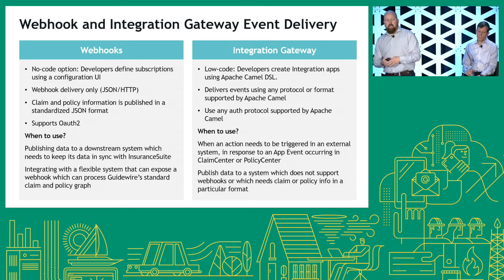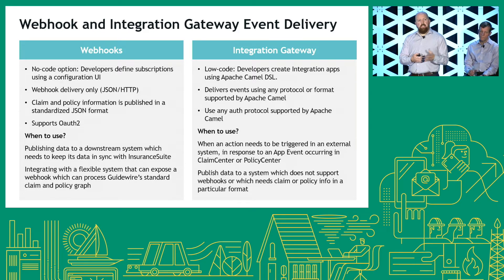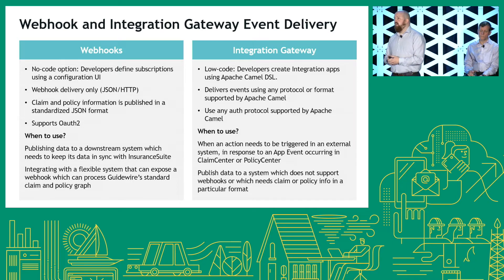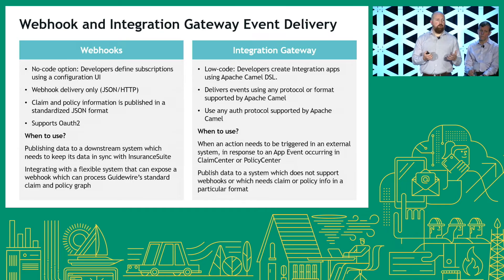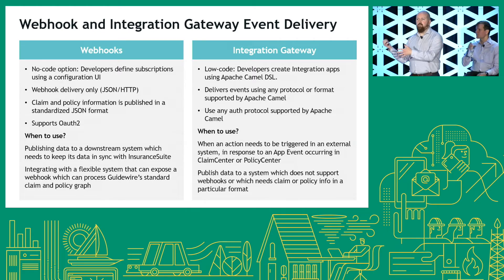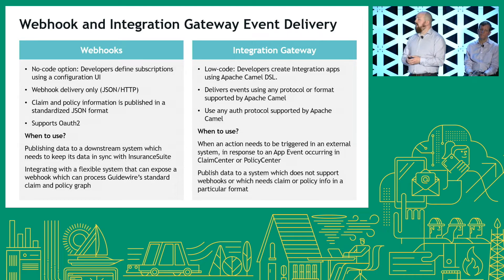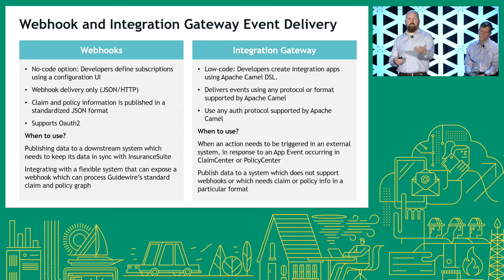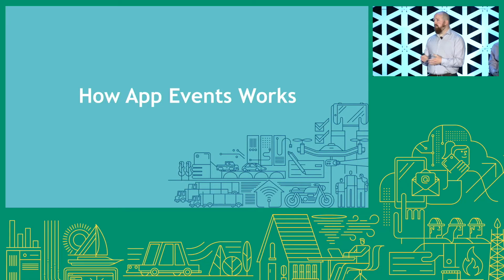To recap: webhooks is the no-code option. All events come out as JSON over HTTP, and any system that can stand up an endpoint will receive them — great for publishing data to other systems. Integration gateway is the low-code option — we saw the DSL just there. It has flexibility to deliver data over different protocols or change what we do with the event and data. With that, let's talk about how it actually works. Many of you will be familiar with event messaging, which this is meant to replace, so it's good to see what we're providing above and beyond what event messaging does today.